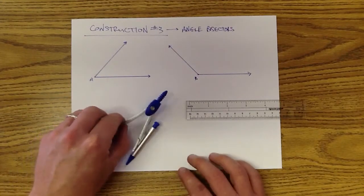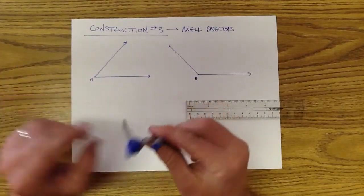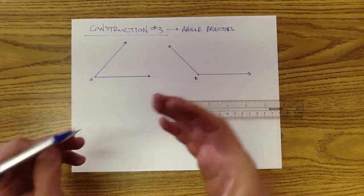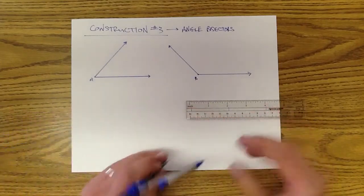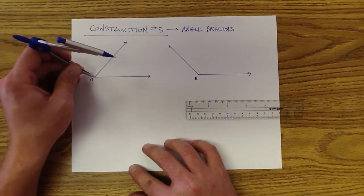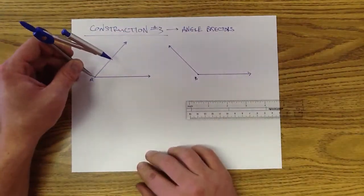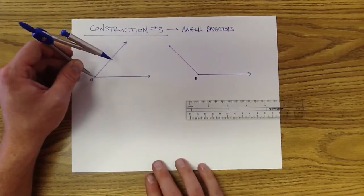At this point you should know how to copy the lengths of segments and you should know how to copy an angle, so move an angle from one position to another. Now we want to figure out how do we cut this angle in half?